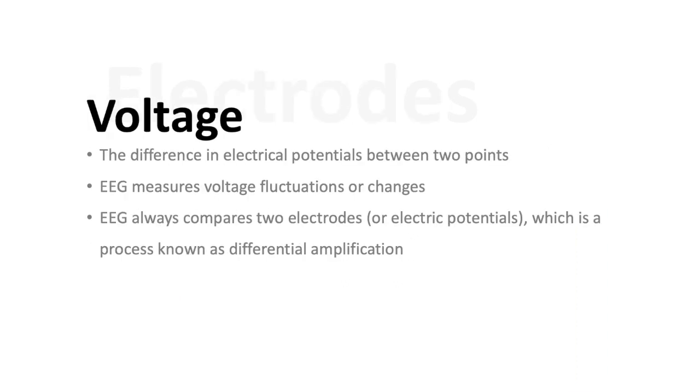So voltage, a concept which is used frequently in EEG, is the difference in electrical potentials between two points. EEG measures voltage fluctuation or changes. EEG always compares two electrodes or electric potentials which is a process known as differential amplification. So we'll get into why this is more important for EEG later but you almost never are just measuring from a single point in EEG. You're always measuring from two points. We will come back to that concept.